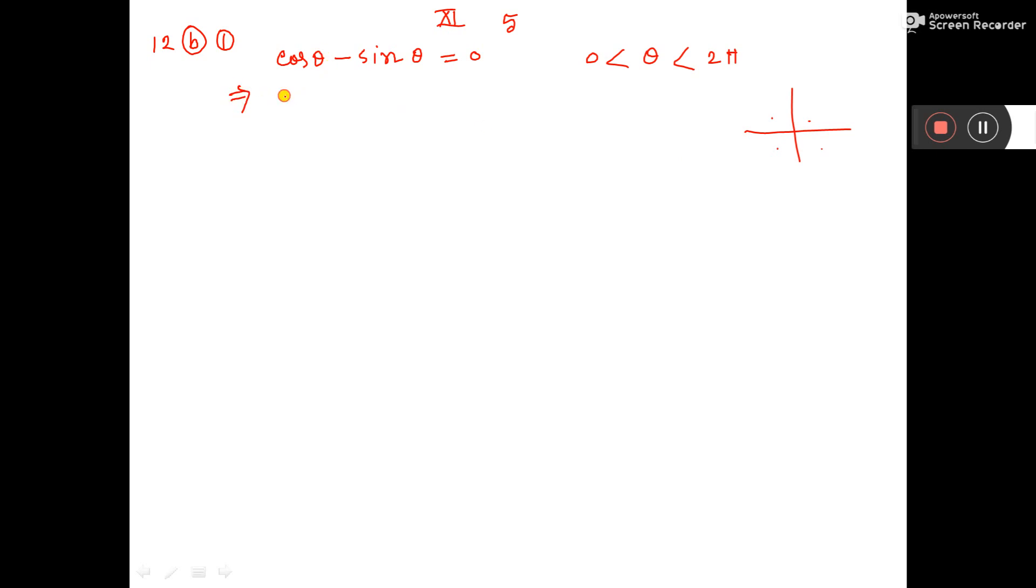So let us solve. Cos theta is equal to sin theta, take that to the other side. Then 1 is equal to sin theta by cos theta. I mean, cos theta you send to the right side. Now, sin theta by cos theta is tan theta. That is equal to 1.